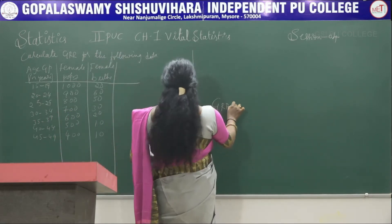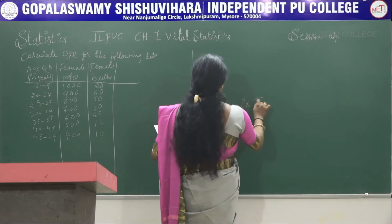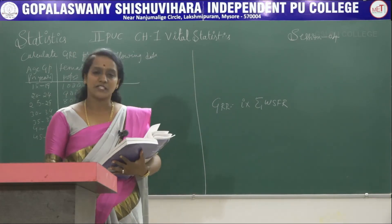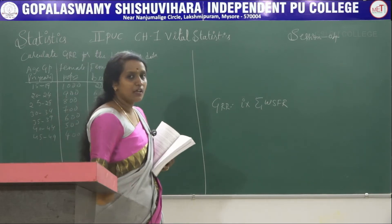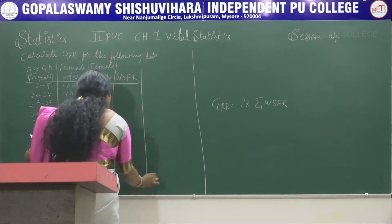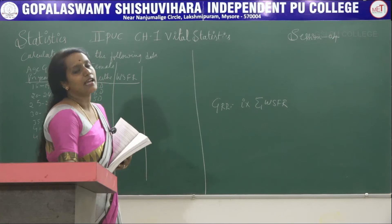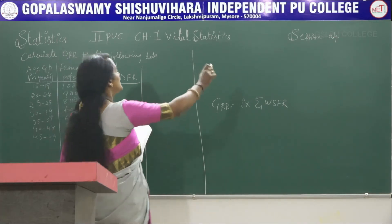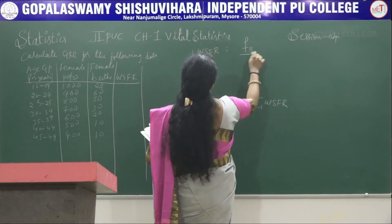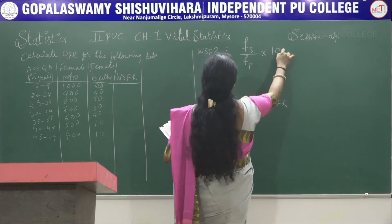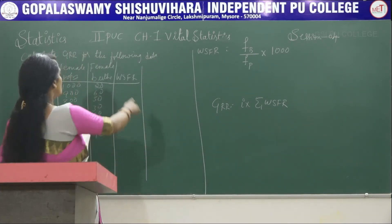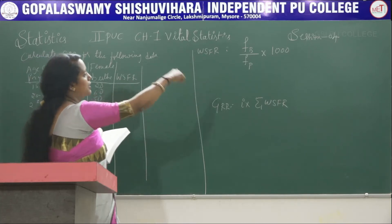To calculate GRR, the formula is: GRR = I × summation of WSFR. WSFR is Women's Specific Fertility Rate. First we have to calculate WSFR. The formula to find WSFR is: WSFR = (Female births ÷ Female population) × 1000.